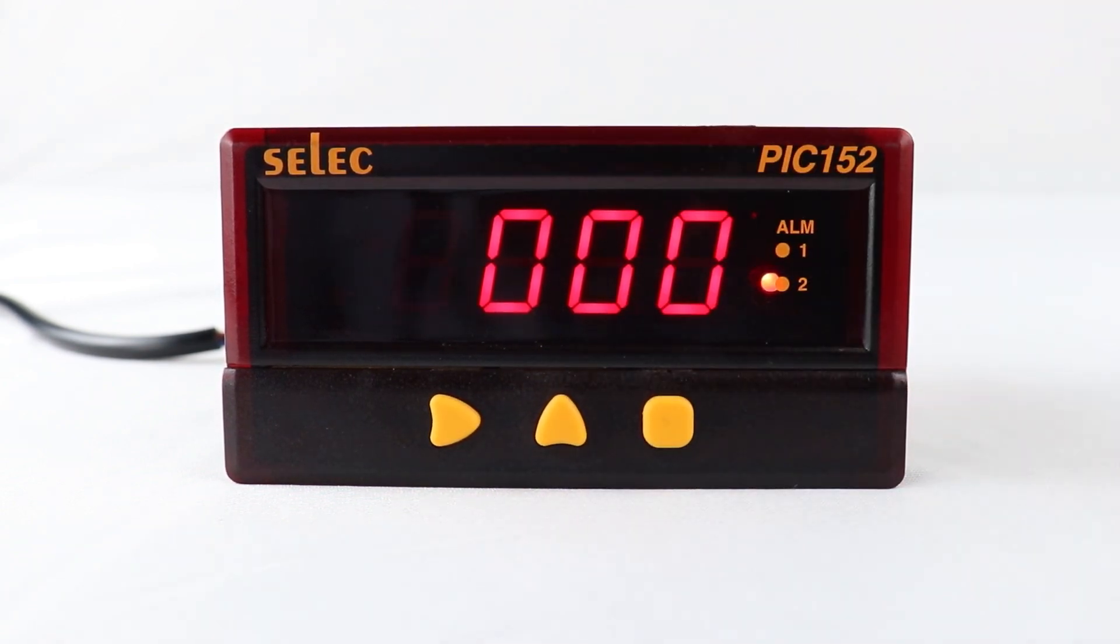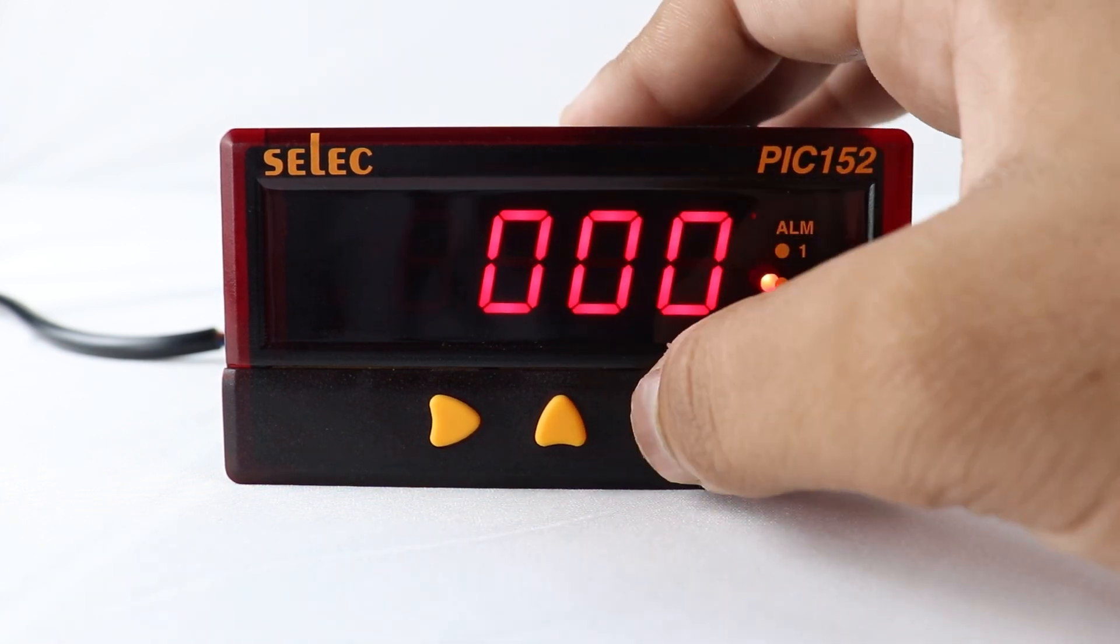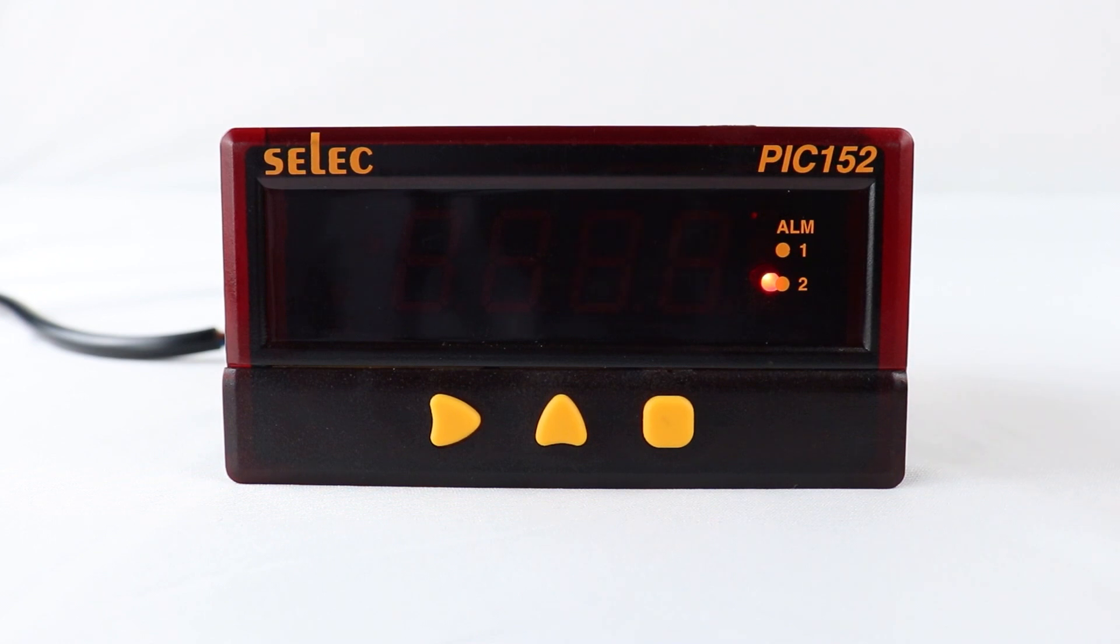Press square key to select lock code. Next parameter is reset, used to set the controller to its default values.